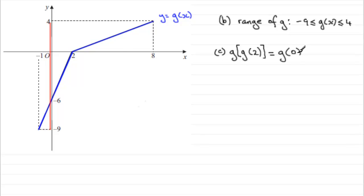And what is g of 0? What do we get when x is 0? When x is 0 you can see that you get minus 6. So that's going to be equal to minus 6.